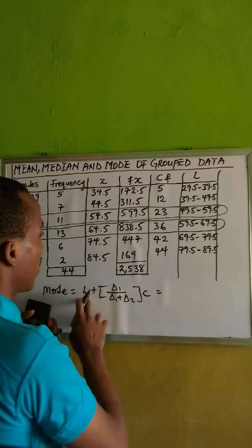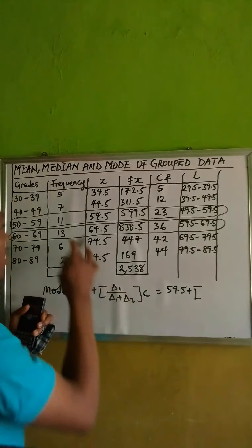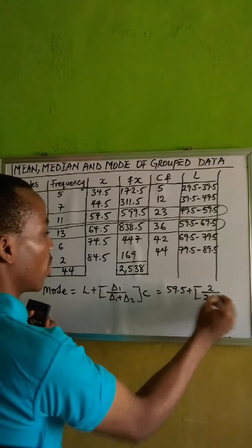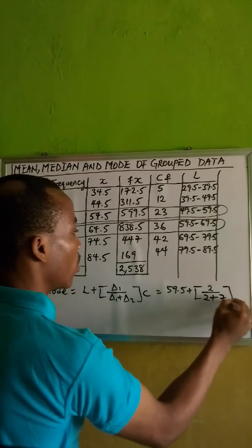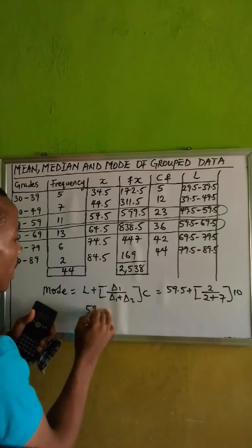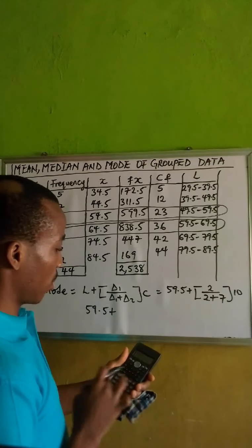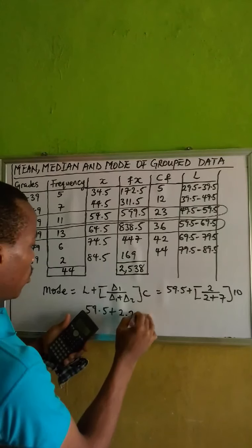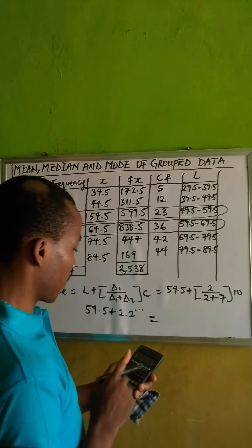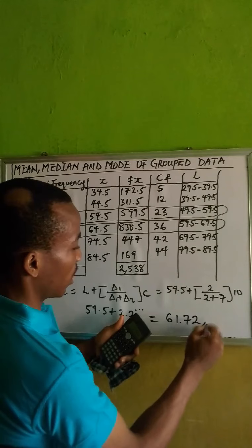Fixing the values: the lower class of the mode is 59.5. Data 1 is 13 minus 11, which gives 2. Data 2 is 13 minus 6, which gives 7. The class size is 10. So we have 59.5 plus 2 over (2 plus 7) times 10 — that's 59.5 plus 2 over 9 times 10, which gives 2.22 repeating. Adding to 59.5, the mode to 2 decimal places is 61.72. That is the mode of this data.